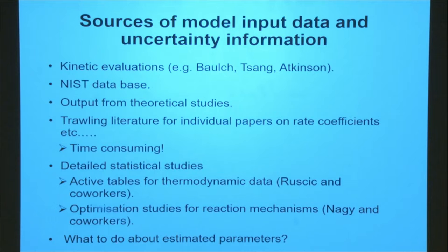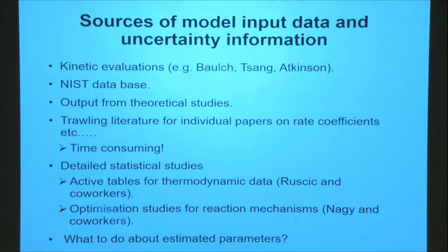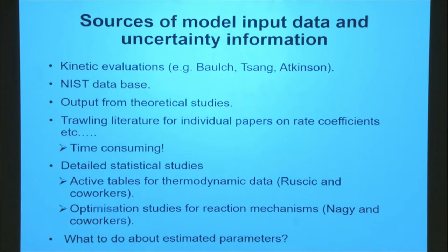But more often than not we are left with trying to estimate uncertainties. Some of the parameters that we're estimating have come from things like rate rules and group additivity, and it would be good to develop a consistent way of estimating parametrizations using those techniques. At the moment we're mainly just using rules of thumb — a factor of two or a factor of five — depending on the level of training data that we've used to predict the rate constants.